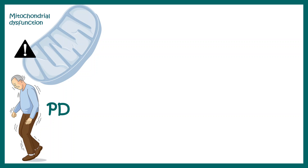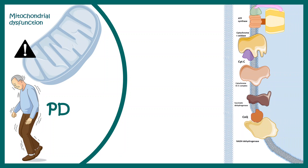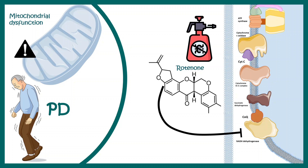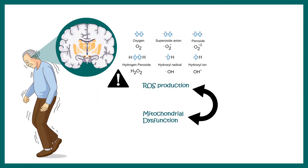Mitochondrial dysfunction is another factor associated with Parkinson's disease. Several pesticides contain rotenone, which is a complex I inhibitor and a known risk factor for Parkinson's disease development. Additionally, there is increased ROS production in the Parkinson's brain, and the ROS scavenging system is probably not functioning well. ROS production and mitochondrial dysfunction together may contribute to disease pathology.